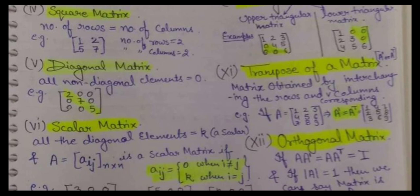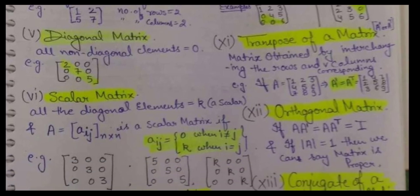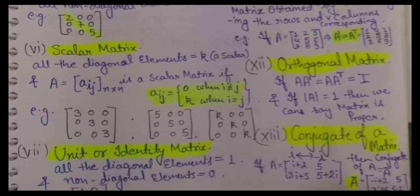We are only talking about those elements which are present on the principal diagonal — that is 2, 7, 5 as shown. Next is scalar matrix. Scalar matrix is a matrix in which all the non-diagonal elements — that means except the principal diagonal, all other elements — will be equal to 0. You can also call it a kind of diagonal matrix; it is diagonal, and after that we apply one more condition.